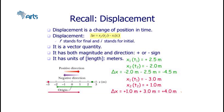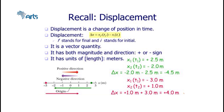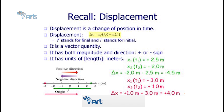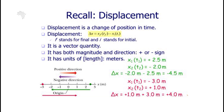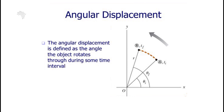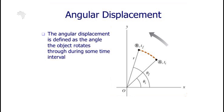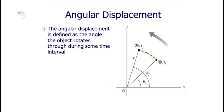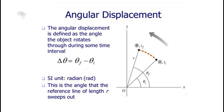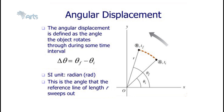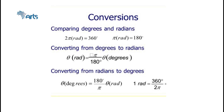In translational motion, displacement is defined as a change of position in time. To find displacement we use change in x, which is final position minus initial position. This displacement is a vector quantity, measured in meters, and its direction is from the initial position to the final one. Angular displacement is defined as the angle the object rotates through during some time interval, calculated as the final angular position minus the initial angular position. The unit of angular displacement is radians, and we can also measure it in degrees and revolutions.